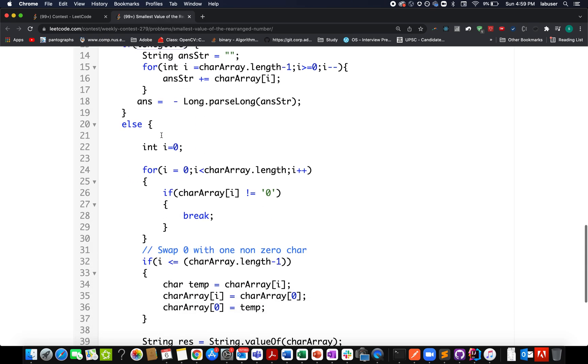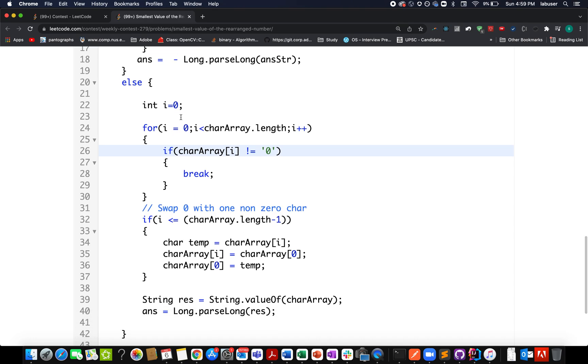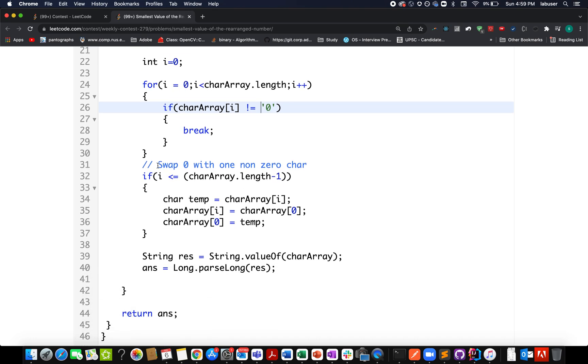Going forward, in case the number happens to be positive, what do I do? I create a counter variable i and it is responsible for iterating all the elements till the time we keep on seeing zeros, because the array has been sorted in ascending order.